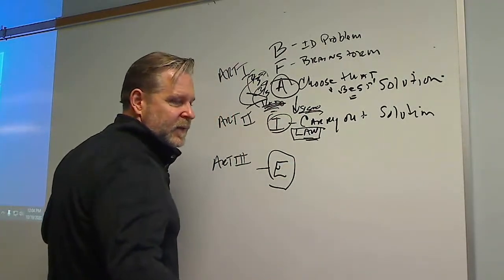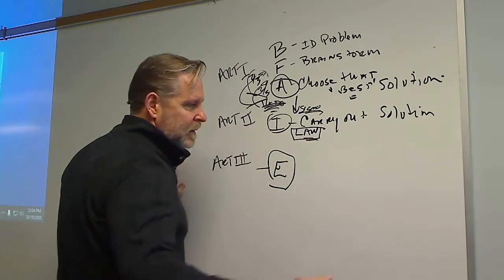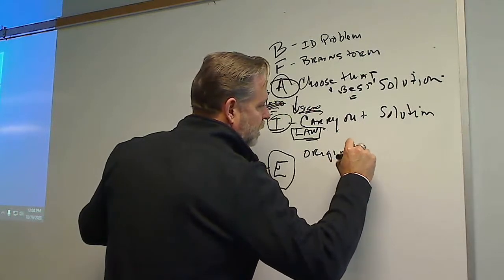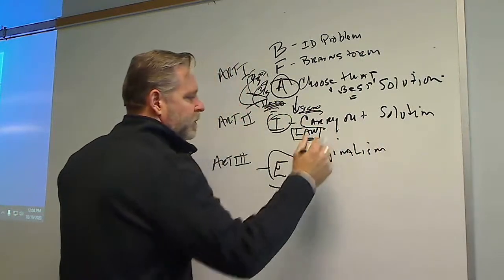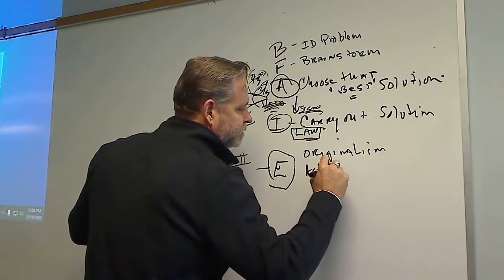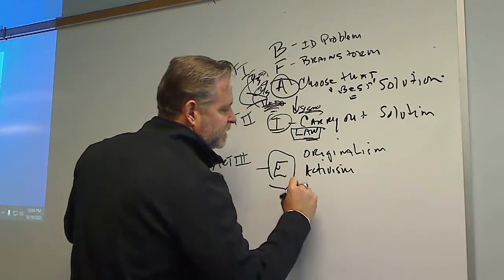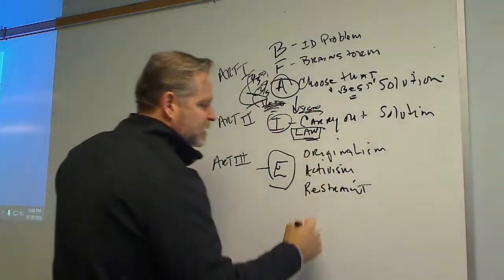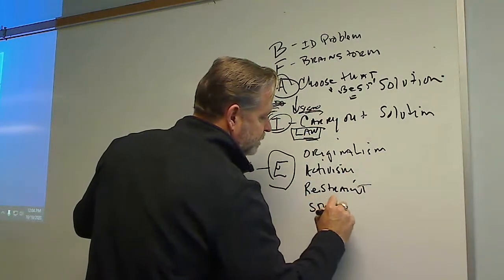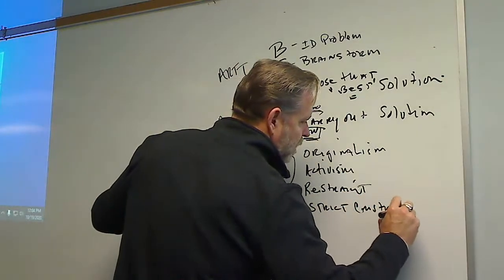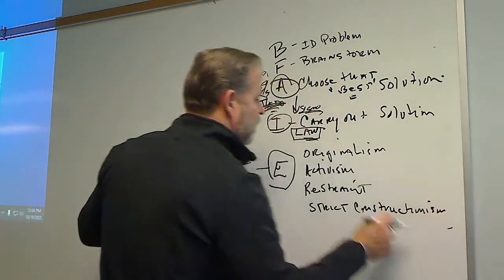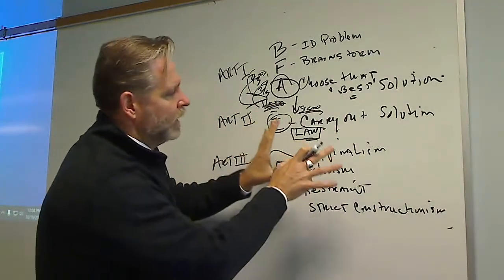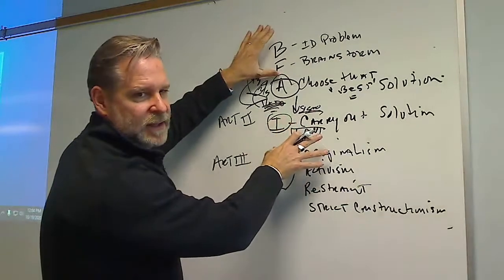This brings us back to judicial philosophy terms: originalism, activism, judicial restraint, textualism, and strict constructionism. All these terms deal with how the court approaches the process of interpretation. When the court is triggered — when some party asks them to evaluate — the court can take a number of different avenues toward coming up with their conclusion.